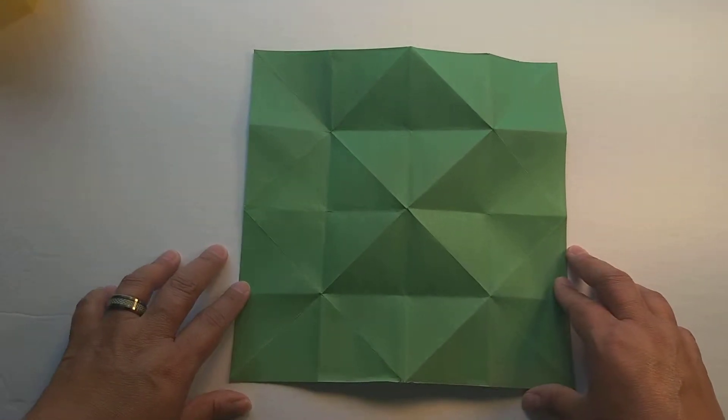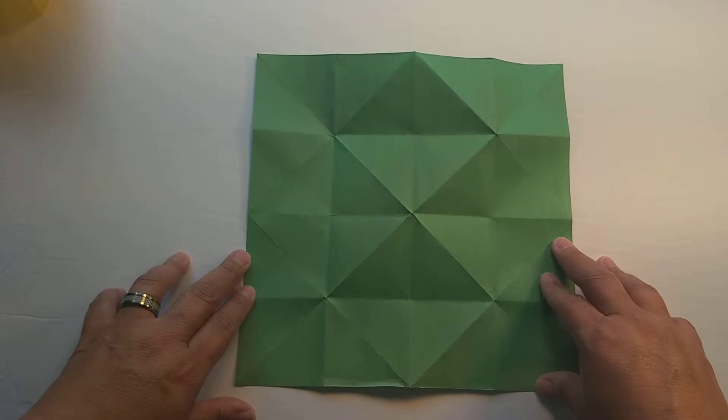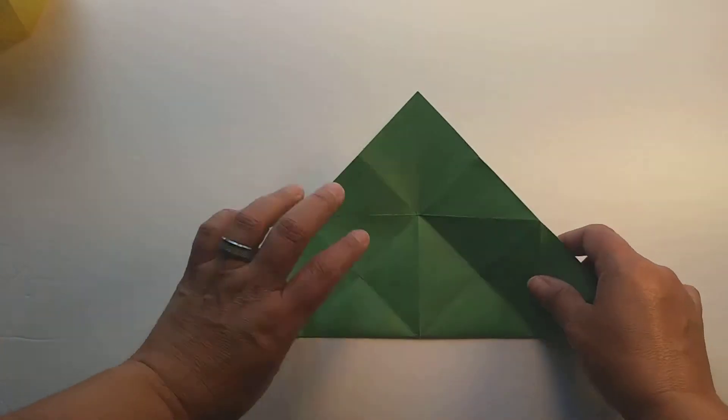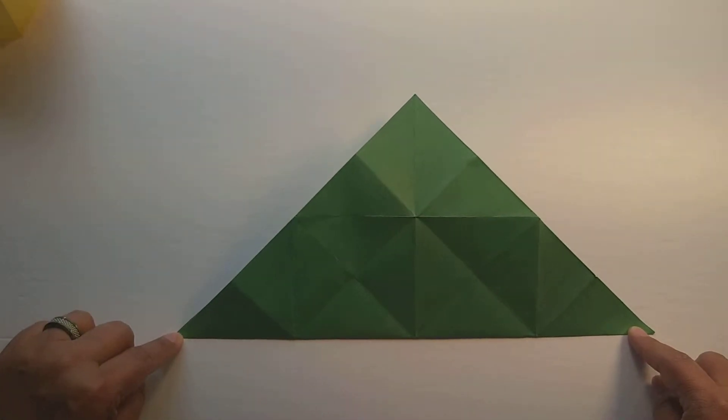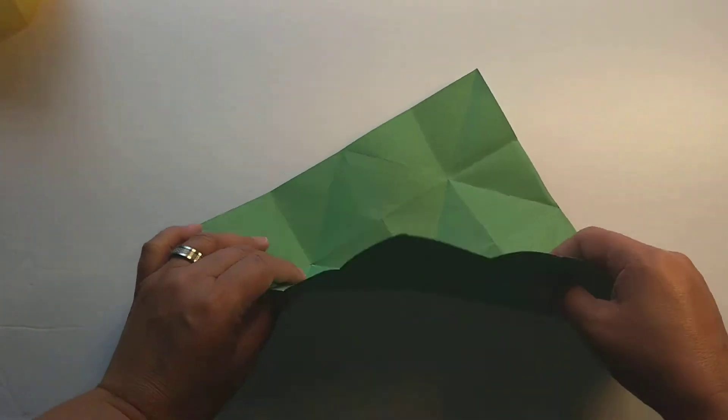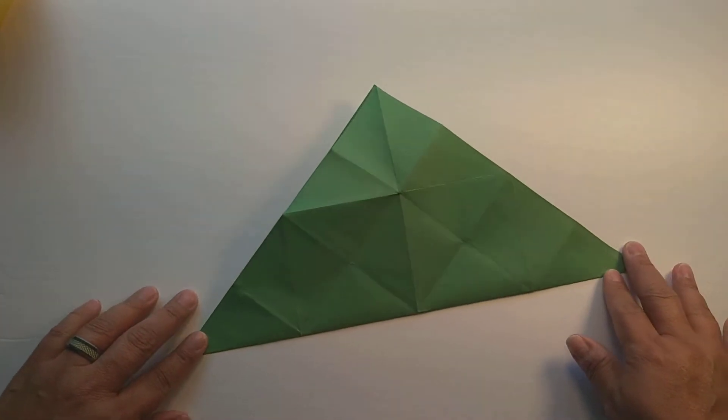You can begin with a square piece of paper, and I'm using construction paper here. You're going to start by folding along the diagonal of the paper, and then you're going to repeat again for the other side.